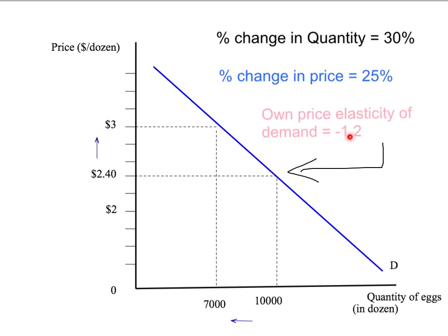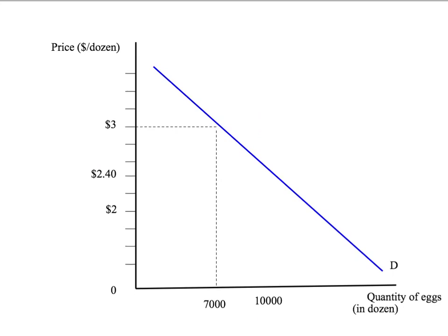Remember that we have the minus sign here, reflecting that quantity has fallen when the price has risen, although often economists leave the minus sign off. Notice also that this elasticity in absolute value terms is greater than one, so this says we have an elastic demand curve for eggs. Notice that we said the elasticity of demand was minus 1.2 at the price of $2.40 and the quantity of 10,000 dozen eggs. Even though we have a straight line demand curve as drawn here, the elasticity of demand is going to change at different points on that demand curve.